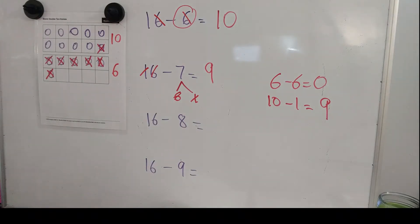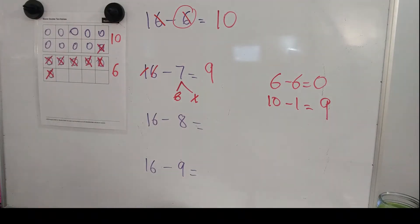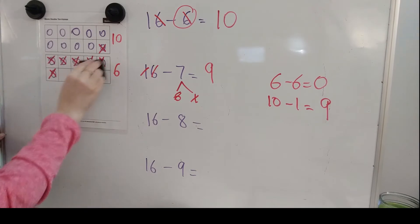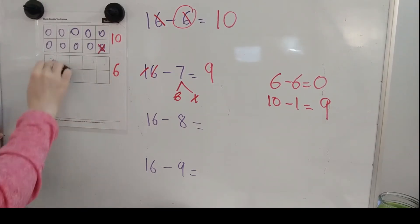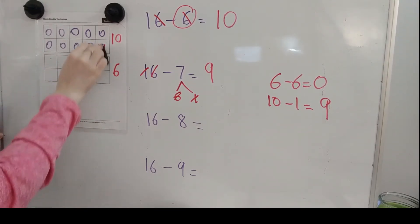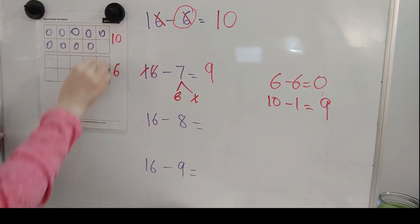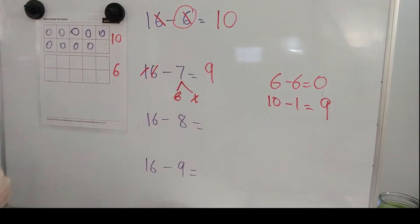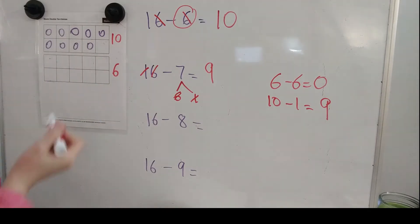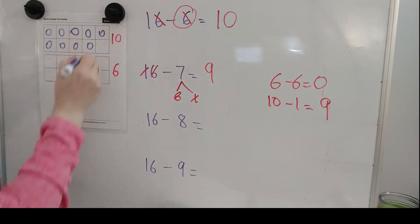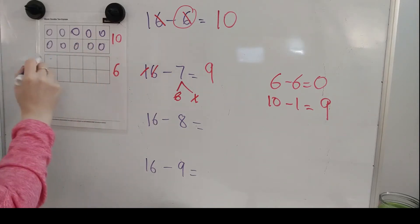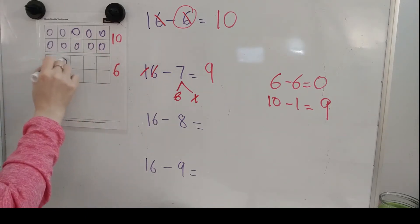Is this getting easier for you guys? Are we getting the hang of our second method of taking away from the 1's place? Let's practice a couple more until we're really comfortable using the 2nd method.